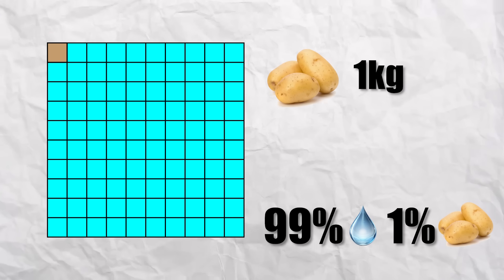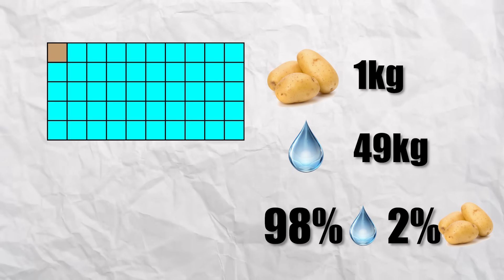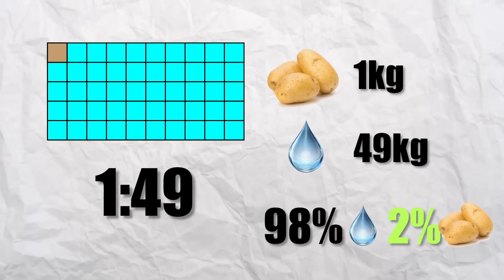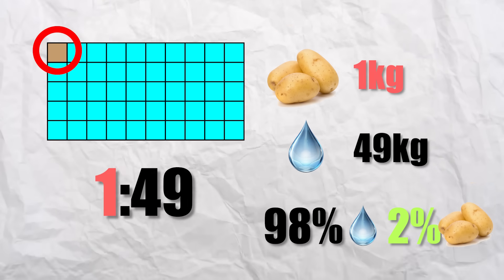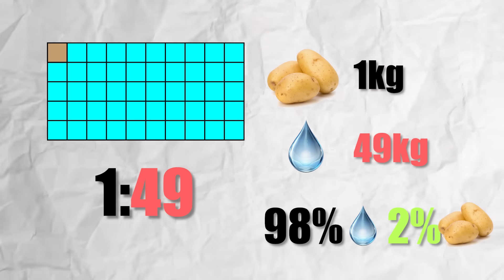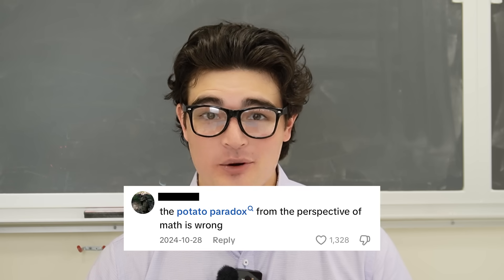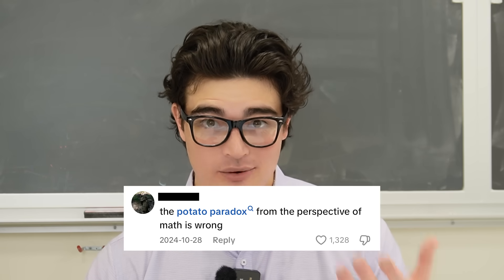I initially have one kilogram of dry mass and 99 kilograms of water, in a ratio of 1 to 99. But when I reduce it to 98% water, my dry mass now makes up 2% of the total mass, giving me a ratio of 2 to 98, or 1 to 49. But I still have one kilogram of dry mass. This means that for every kilo of dry mass, there's now 49 kilos of water, and thus there are 50 kilos in total. So from the perspective of math, this is indeed correct.